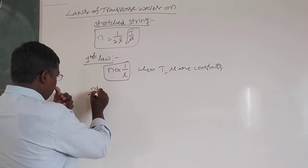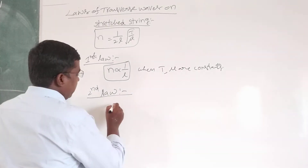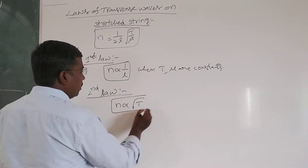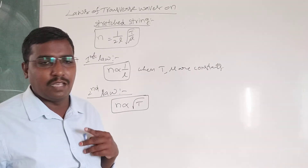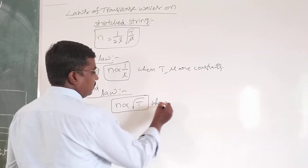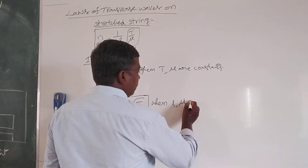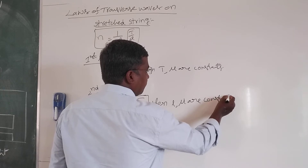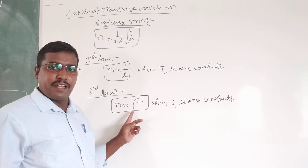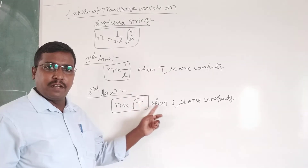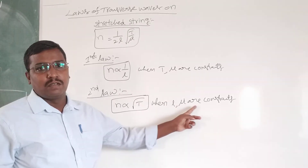The second law states that N is directly proportional to the square root of the tension in the string, when the length of the string and the linear mass density remain constant. So the fundamental frequency of a string is directly proportional to the square root of the tension, when the length and linear mass density remain constant.